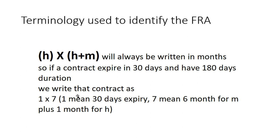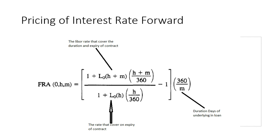Next, we solve how to price the interest rate forward — that is, how to calculate the fair value or intrinsic value of the FRA. The formula used is: FRA(0, H, M), meaning today's price for an FRA expiring at H based on M-day underlying, equals one plus L-naught, where L-naught is the LIBOR rate. In Pakistan we use KIBOR, denoted SK instead of L-naught.